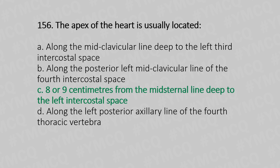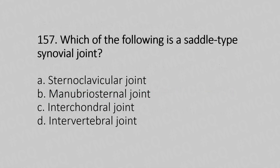Now let's move to question number 157. Which of the following is a saddle type synovial joint? Option A: sternoclavicular joint. Option B: manubriosternal joint. Option C: intercostal joint. Option D: intervertebral joint. And the answer is Option A: sternoclavicular joint.